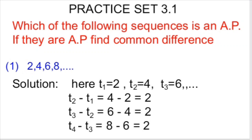The first question asks which of the following sequences is an AP, and if they are AP, we have to find the common difference. The first sequence is 2, 4, 6 and 8.